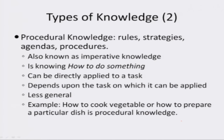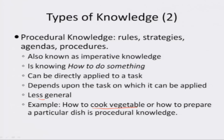Procedural knowledge includes rules, strategies, agendas and procedures. It is also known as imperative knowledge — it is knowing how to do something or a particular task. It can be directly applied to a task, but it depends on the task to which it can be applied. For example, how to cook a vegetable or how to prepare a particular dish is procedural knowledge. The sequence of steps required to cook a vegetable is very task-dependent and cannot be applied to do some other task — like baking a cake. Hence this knowledge is less general.